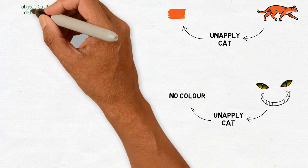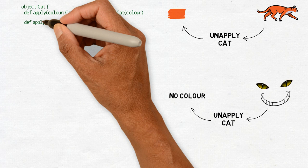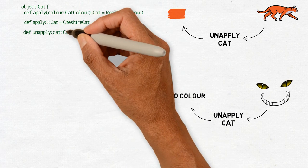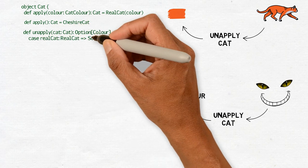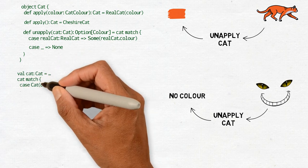So we have the apply method which gives us a real cat and another apply method which gives us a Cheshire cat. And then we have an unapply method that will give us either the color of the cat or nothing.